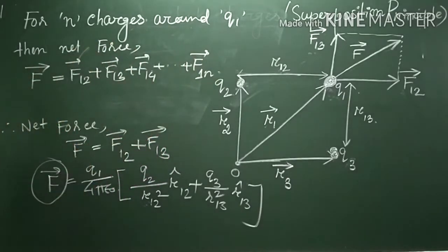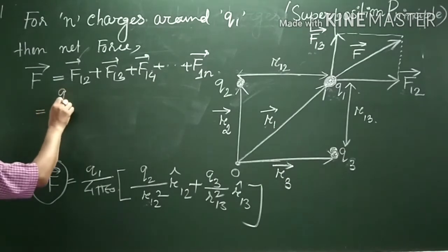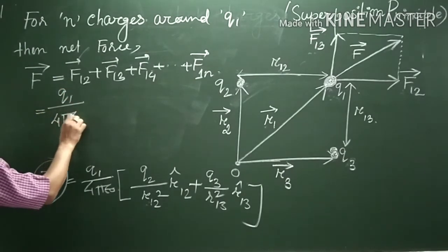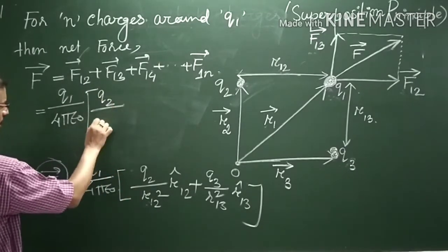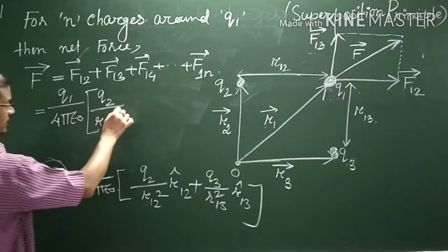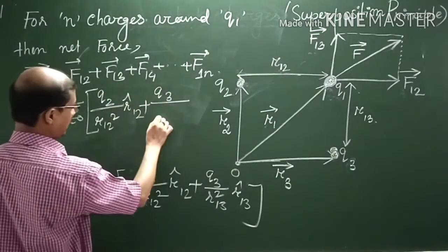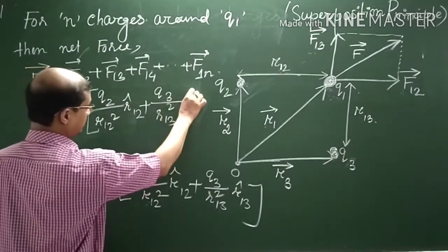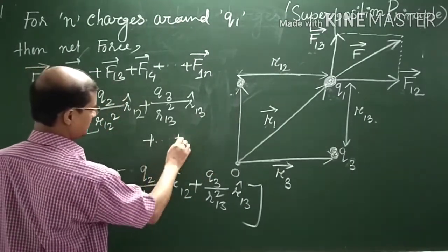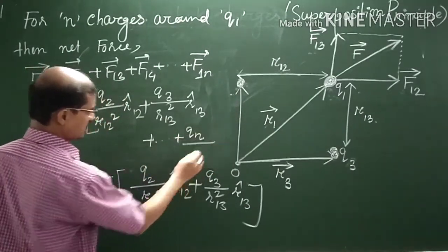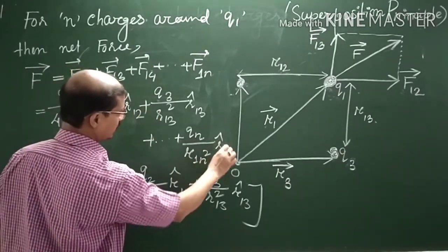This can be written as Q1 by 4πε₀ times bracket: Q2 by R12 square R cap 12 plus Q3 by R13 square R cap 13 plus up to QN by R1N square into R cap 1N.